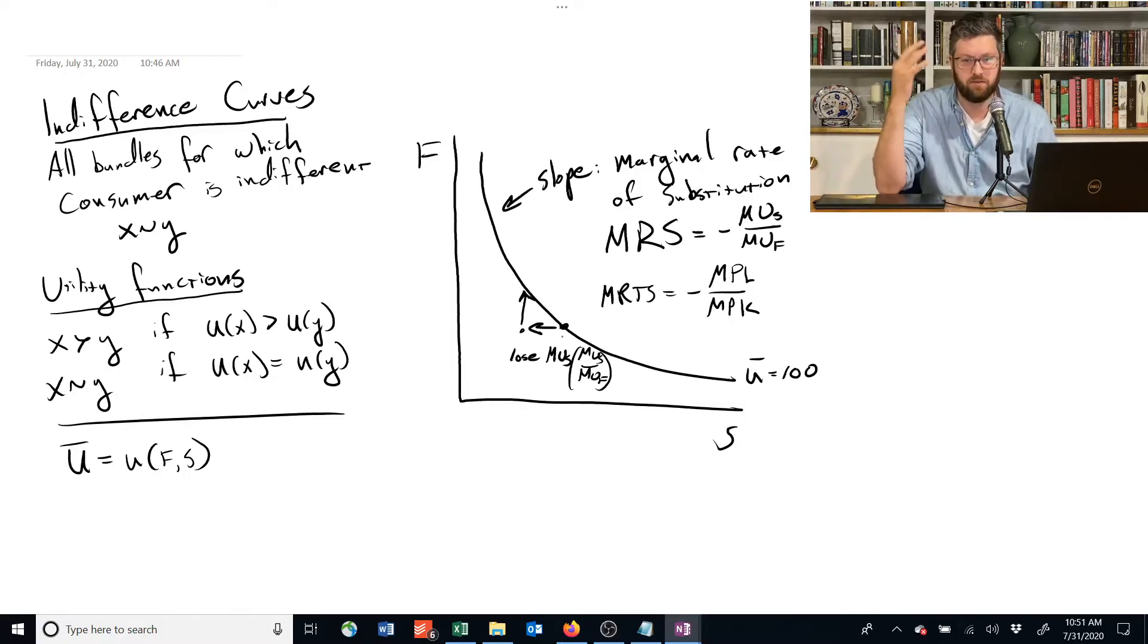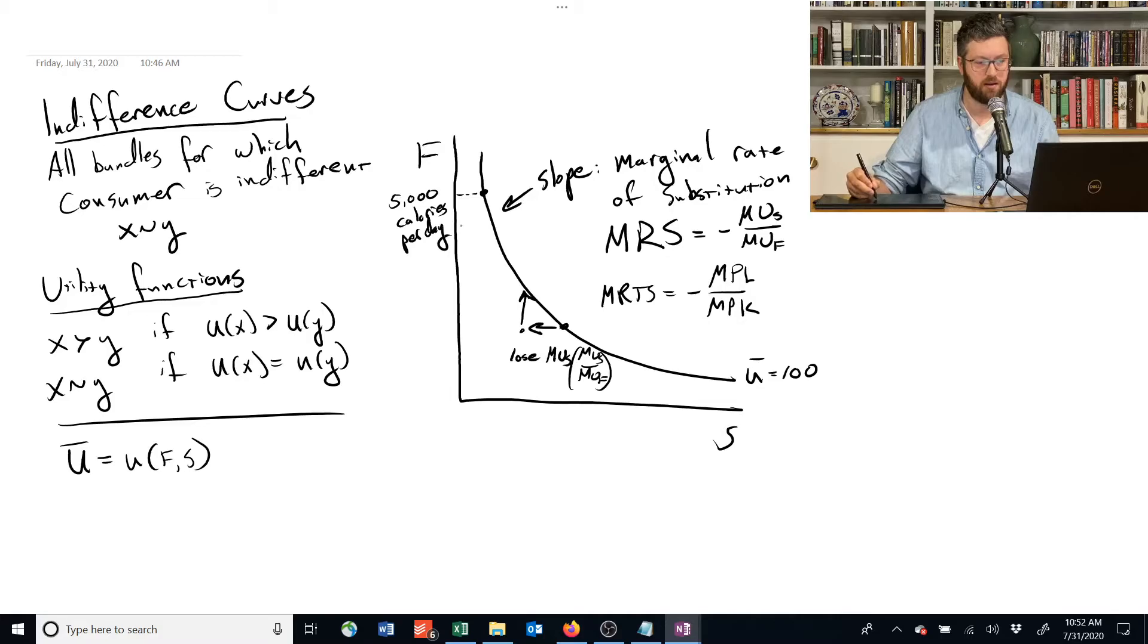And this kind of marginal rate of substitution has the same interpretation as sort of this marginal rate of technical substitution. Like, it tells us that the scarce good is sort of more important. So if I'm all the way over here, this means I have lots of food. I've got like a feast. So we can call this like 5000 calories a day. But I'm living in a tiny little shared apartment, you know.